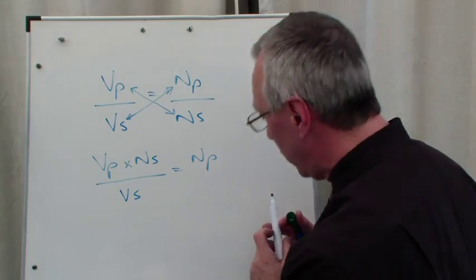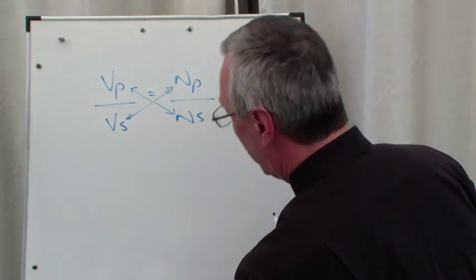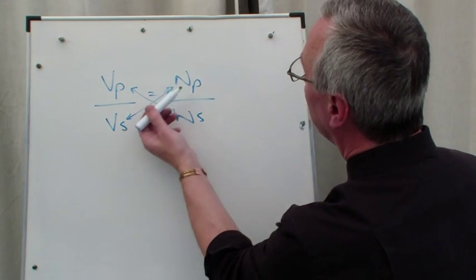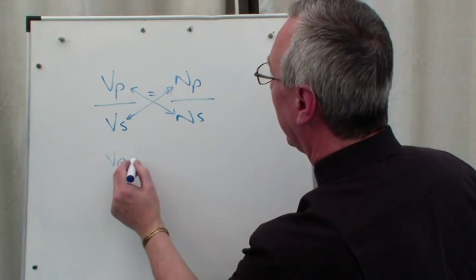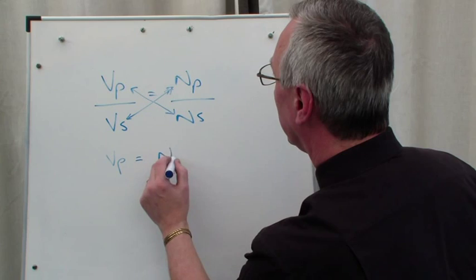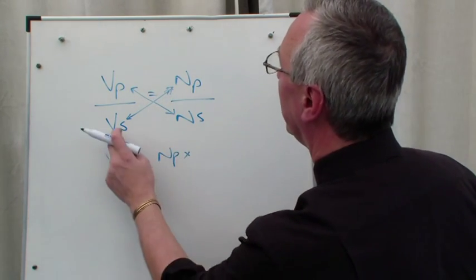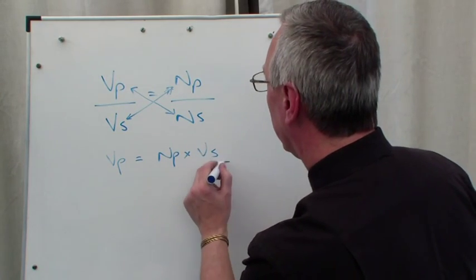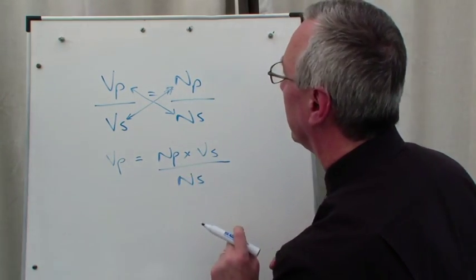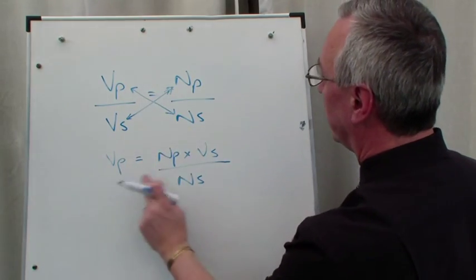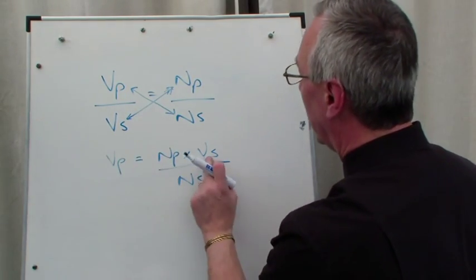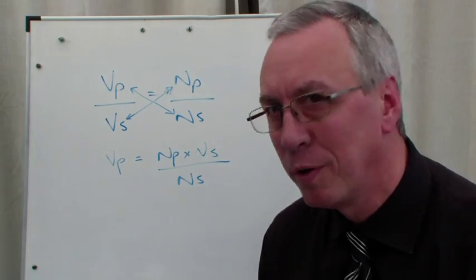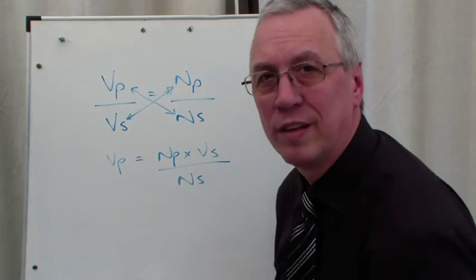So if we want, let's say for example, Vp on its own, we can move Vs across there quite quickly and get Vp equals Np times Vs divided by Ns. This was to get Vp on its own. We've taken the Vs, it's a division, it's become a multiplication. Now you might need to watch that a couple of times in order to get that principle.